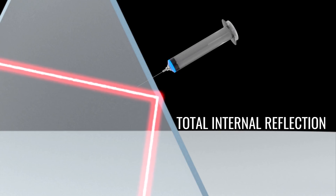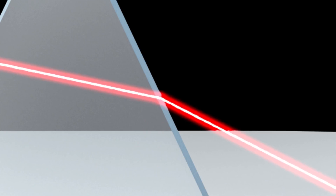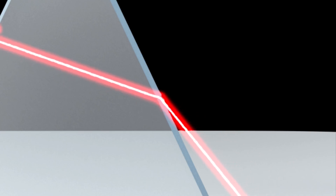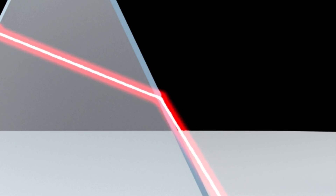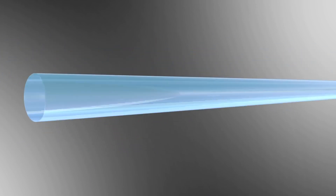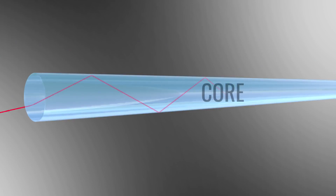Total internal reflection is possible if we increase the incident angle rather than increasing the refractive index. In this case, at a certain angle called the critical angle, the light will come back to the first medium. This phenomenon of total internal reflection is used in optical fiber cables to transmit light. The simplest form of optical fiber cable is a cylindrical glass with a high refractive index. If the laser strikes the interface at an angle greater than the critical angle, total internal reflection will happen and the light will reach the other end.